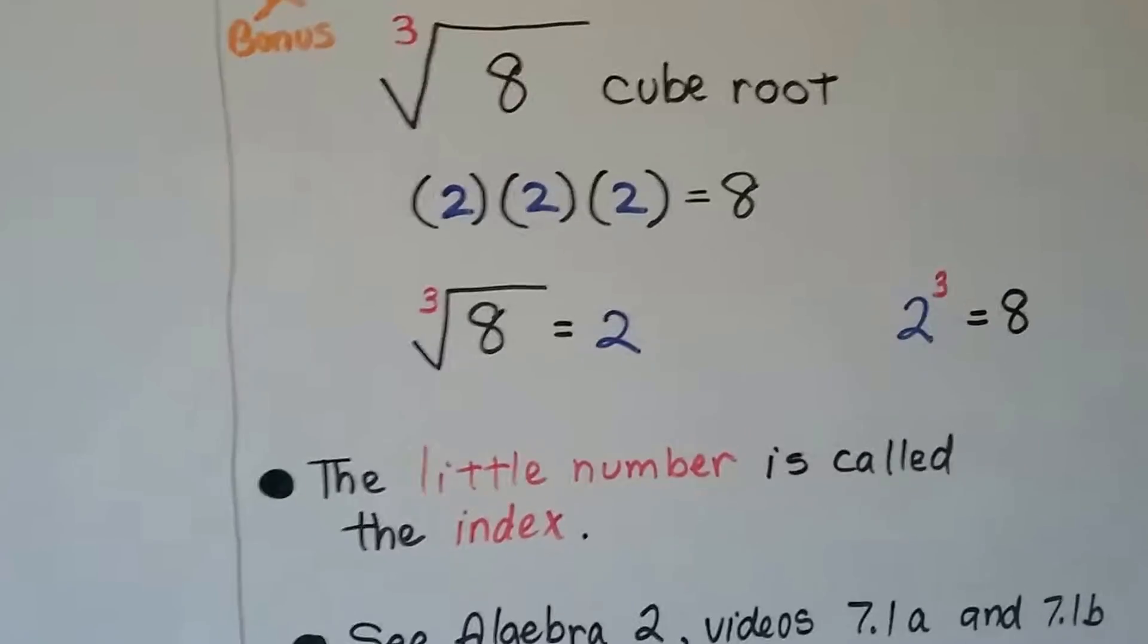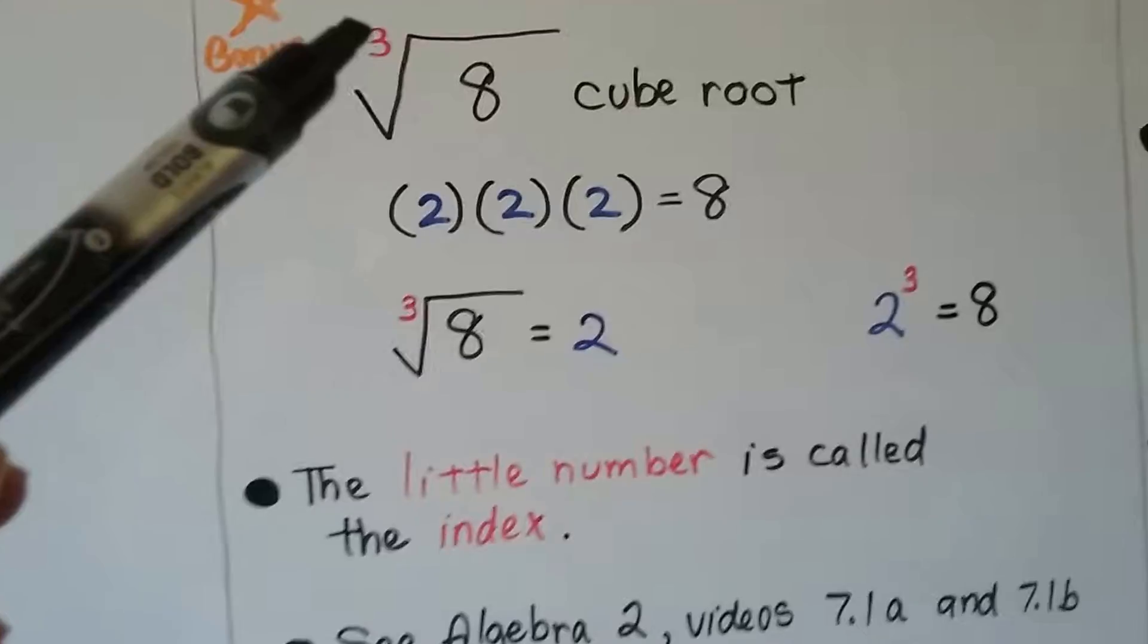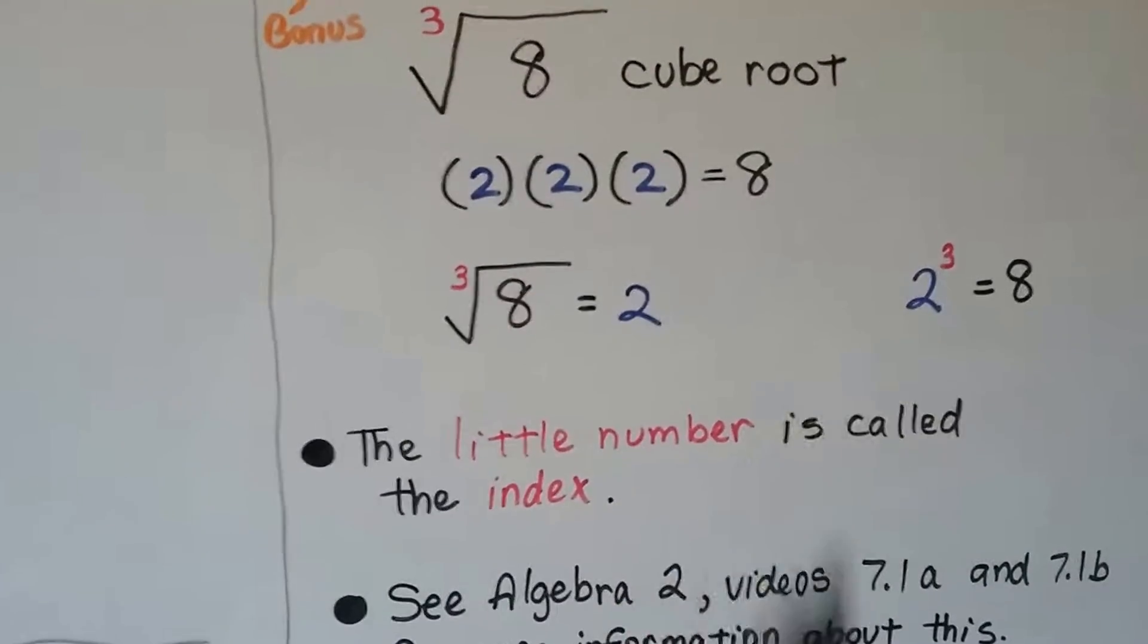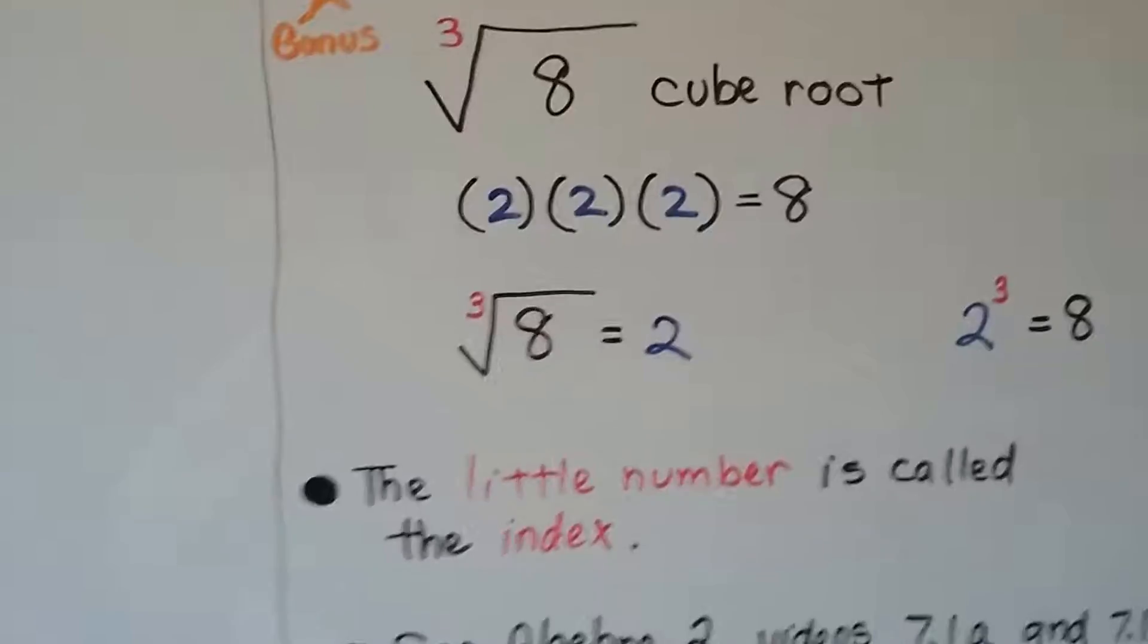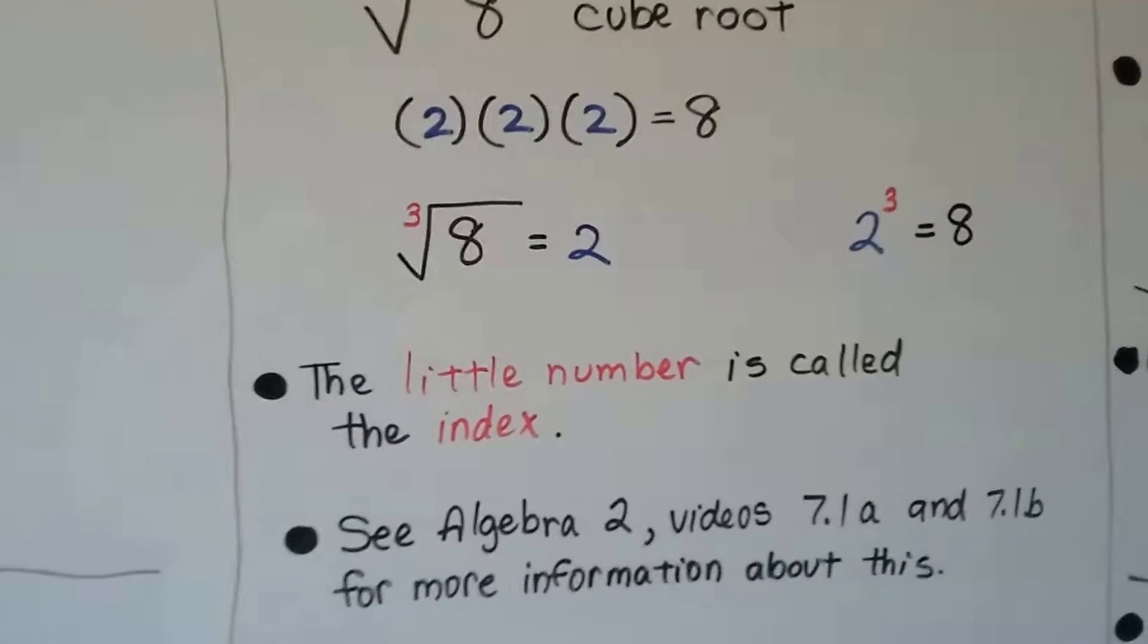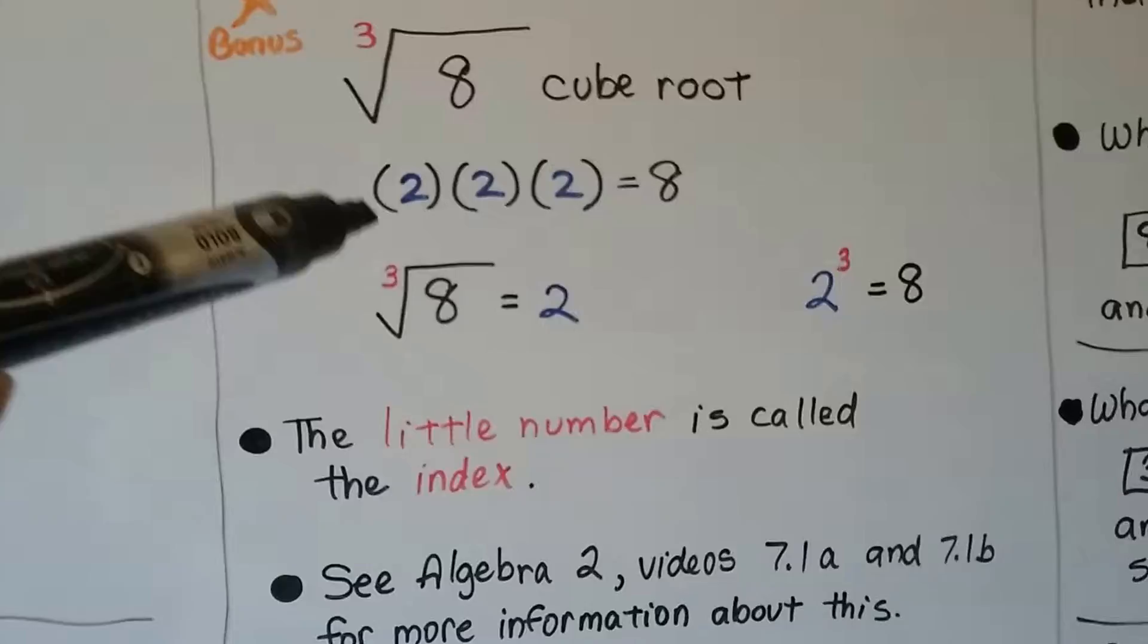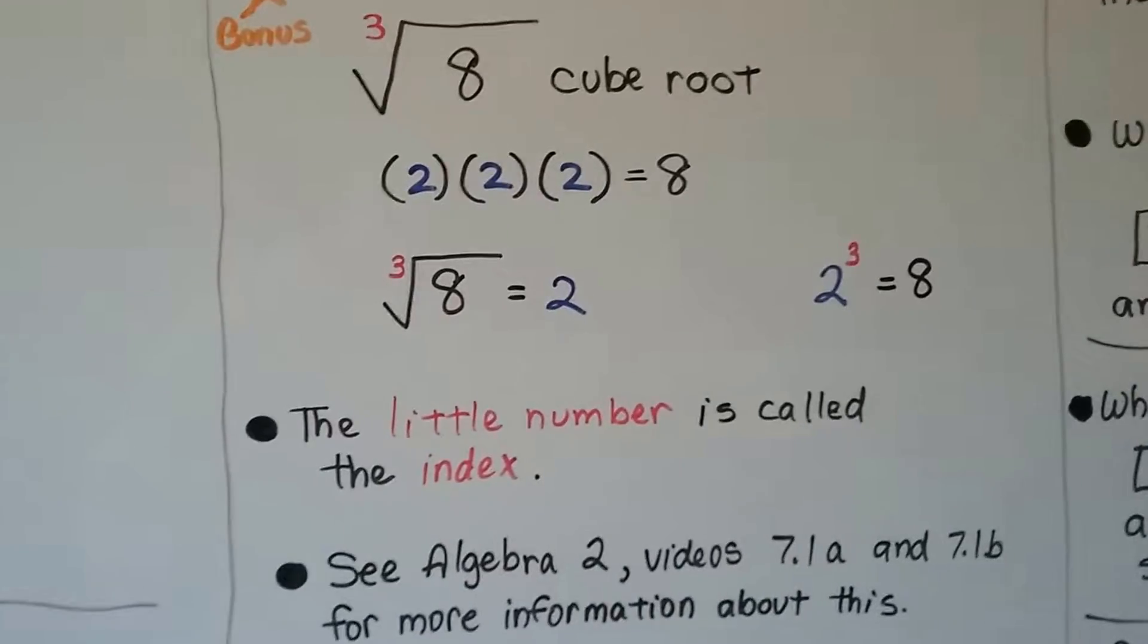Now, when you see a little 3 there, that means the cube root. That means there's three numbers multiplied to itself that will equal 8. So, 2 times 2 is 4, times 2 is 8. The cube root of 8 is 2 because 2 to the third power equals 8. And we can have 4th and 5th and 6th and 7th and 8th roots. That little number is called the index. Now, if you want to know more about this, you can see my Algebra 2 videos, 7.1a and 7.1b. And it'll teach you more about odd roots and kth roots and these indexes. That's all considered high school Algebra. They just don't cover it in GED Math.